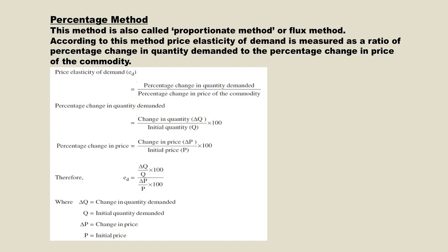Therefore, the formula is: ED = (ΔQ/Q) × (P/ΔP), where ΔQ is the change in quantity demanded, Q is the initial quantity demanded, ΔP is the change in price, and P is the initial price. This is the formula for calculating price elasticity of demand by the percentage method. For example: if the quantity demanded rises by 20% due to an 8% fall in price, then price elasticity of demand equals 20 divided by 8, which gives us 2.5.